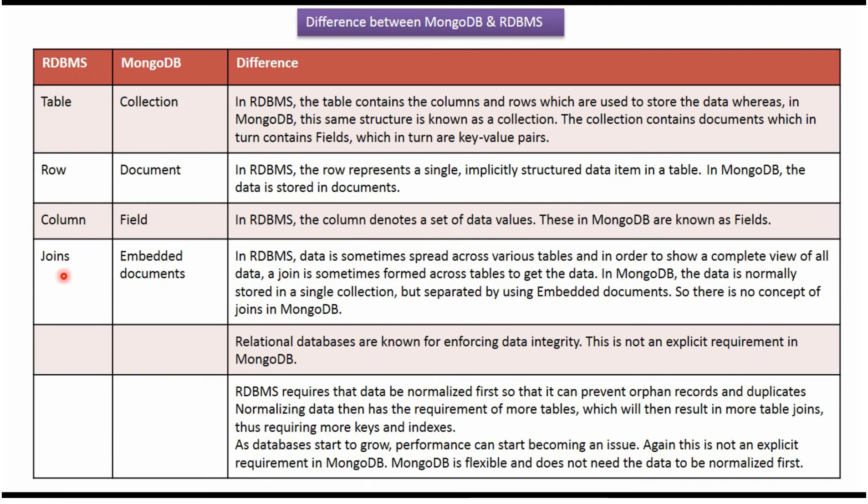In RDBMS, sometimes data is spread across various tables. And in order to show a complete view of all the data, a join is formed across tables to get the data. In MongoDB, data is normally stored in a single collection but separated by using embedded documents, so in MongoDB there is no concept of joins.